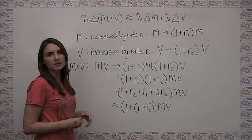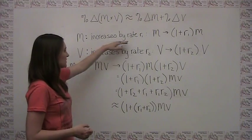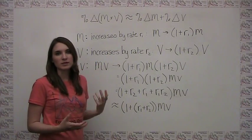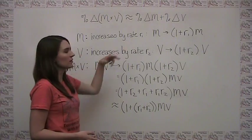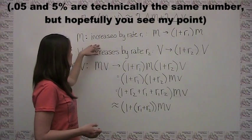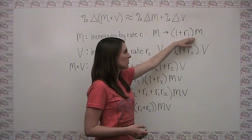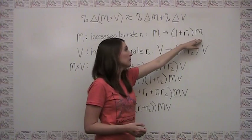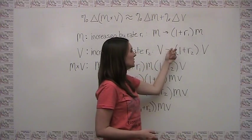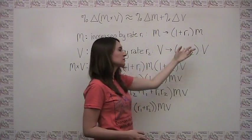I've set up an algebraic example equivalent to the one we just did with numbers. Let's say that M increases by some rate r1. Note that r1 is a rate, not a percentage — so a reasonable value for r1 would be 0.05 rather than 5 percent. If M increases by rate r1, then M becomes (1 + r1) multiplied by M, because distributing gives you M plus the rate of increase times M.